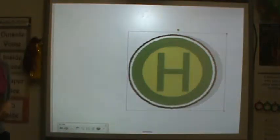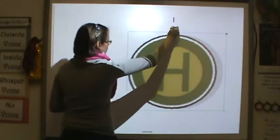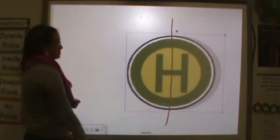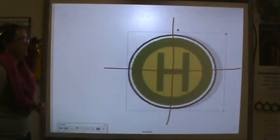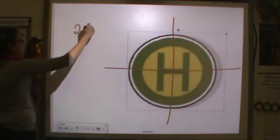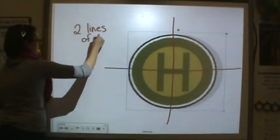Let's look at this. This H, I can fold in half that way and have a line of symmetry. I can also fold it in half this way and have a line of symmetry. So, there are two lines of symmetry.